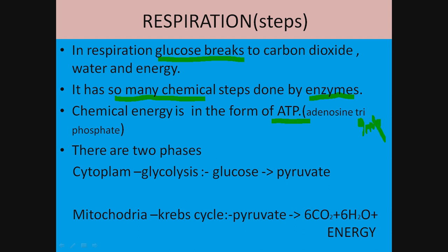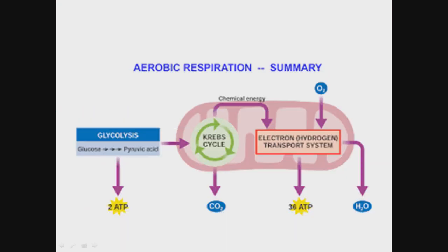There are two phases in respiration. First is glycolysis, which occurs in the cytoplasm of the cell, where glucose is converted into pyruvate. Pyruvate then enters the mitochondria, where it is converted into carbon dioxide, water, and energy — this is called the Krebs cycle. Glycolysis releases 2 ATPs, and the Krebs cycle produces 36 ATPs, giving a total of 38 ATPs in aerobic respiration.